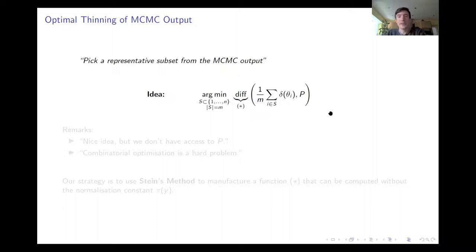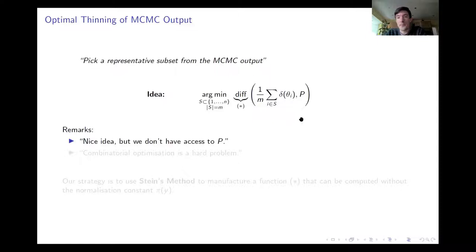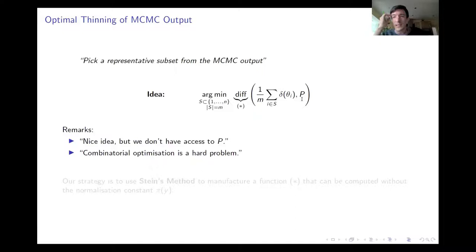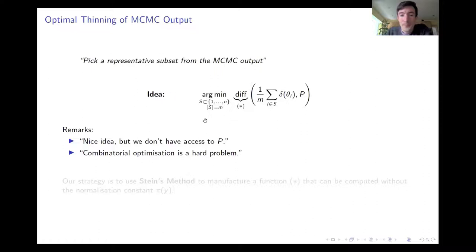The goal, summarized in quotes: pick a representative subset from the MCMC output. Formally, let theta_1 to theta_n be the MCMC output — the states visited by the Markov chain. We attempt to select a subset of fixed cardinality m, where typically m is much smaller than n, by minimizing some notion of the difference between the empirical measure supported on that subset S and the posterior distribution we're trying to approximate. The main challenges are: we don't know what P is, so we can't directly measure the difference; and even if we could, the selection itself may be a combinatorially difficult optimization problem.